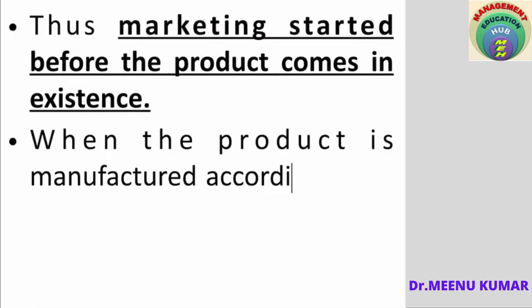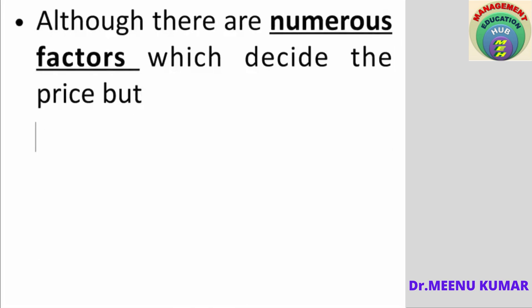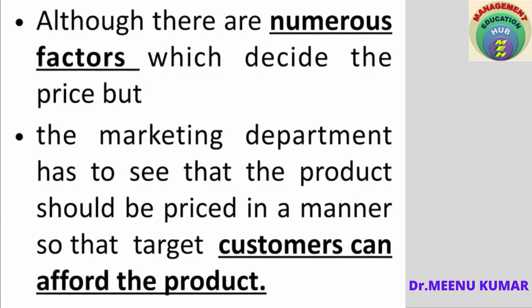When the product is manufactured, the pricing of the product is also part of marketing. Pricing is done on the basis of the cost of production and many other factors, like the type of market in which it is operating and the competition — what competitor companies are doing. But the marketing department must ensure the product is priced in such a manner that it is affordable by the target customer. If the price is too high, the target customer cannot afford it; if it is too low, the customer may doubt the quality. So pricing should be appropriate and affordable.